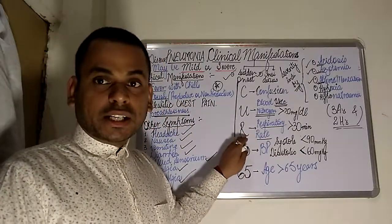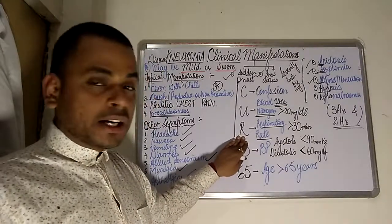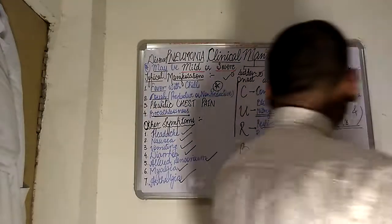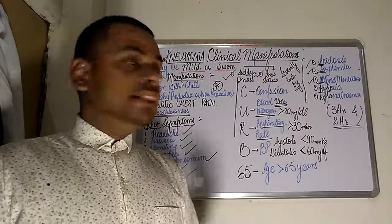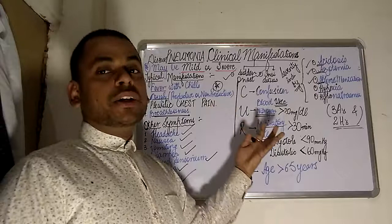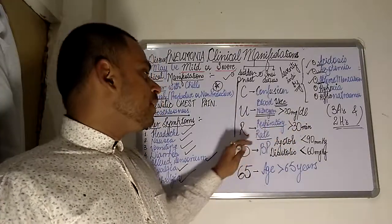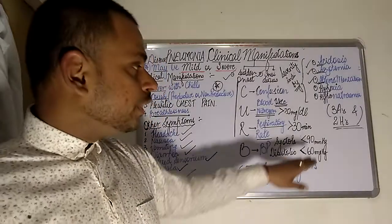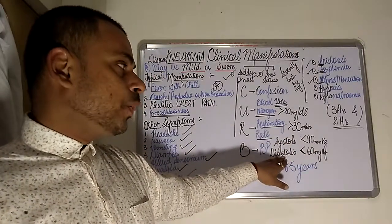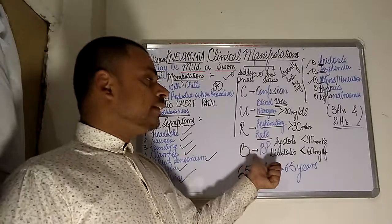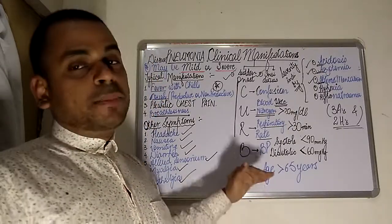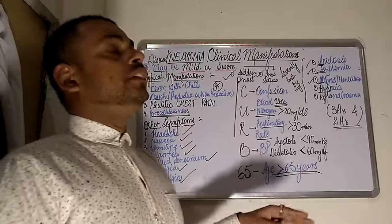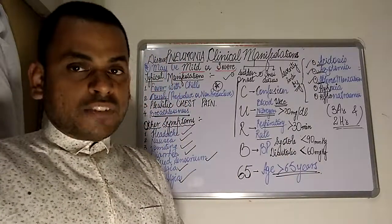The R of CURB refers to respiratory rate — if the patient's respiratory rate is greater than 30, the severity of pneumonia is much higher. The B refers to blood pressure — if systolic blood pressure is less than 90 and diastolic is less than 60. Additionally, if the patient is above 65 years of age, hospitalization should be considered.